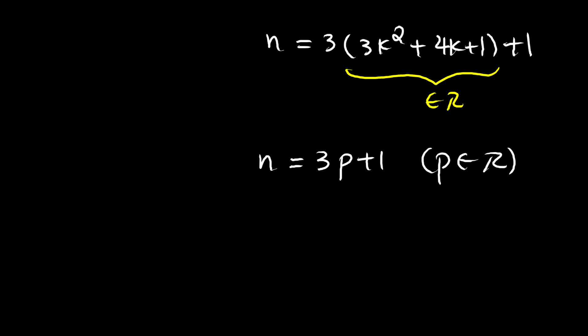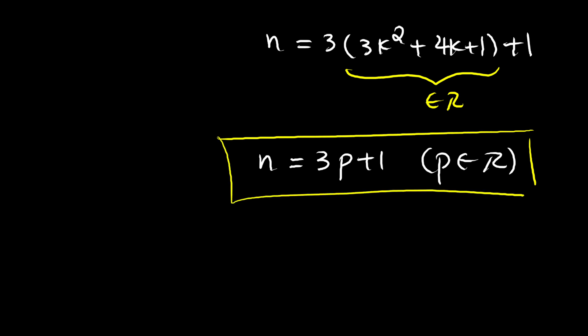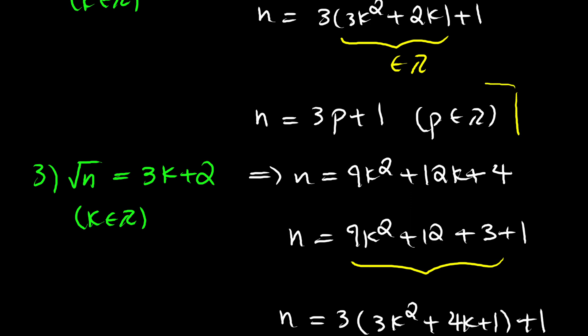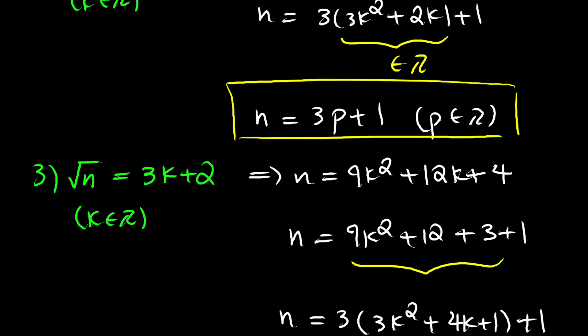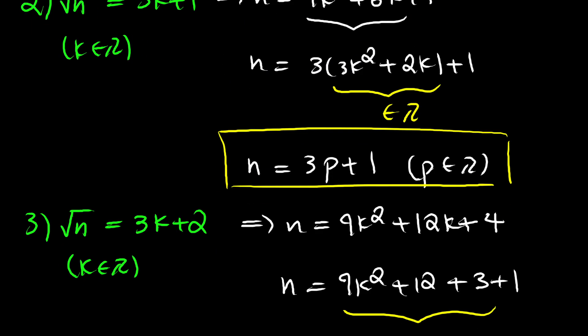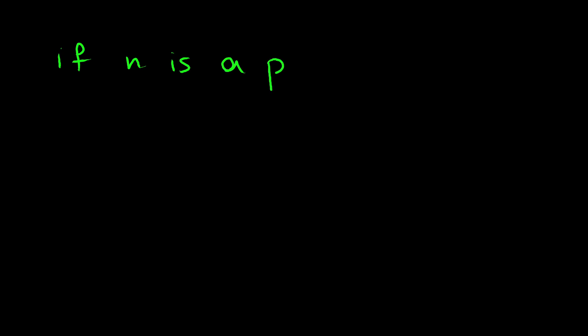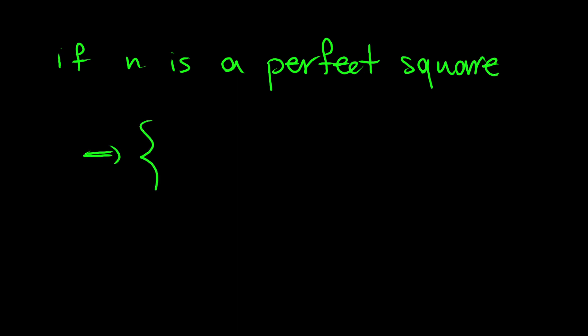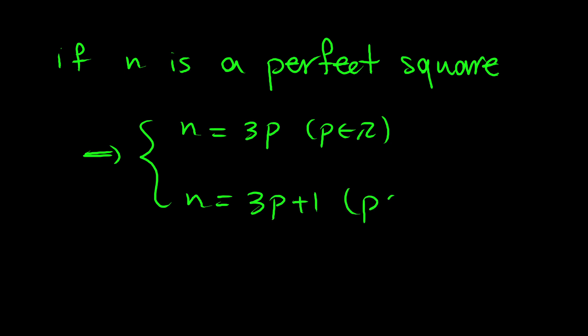We have shown that if n is a perfect square, it is either in the form 3 times some integer, or 3 times some integer plus 1. So if n is a perfect square, then n equals 3p or n equals 3p plus 1, where p is an integer. We now have two scenarios for n to examine.